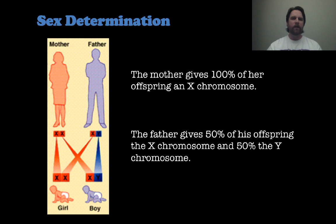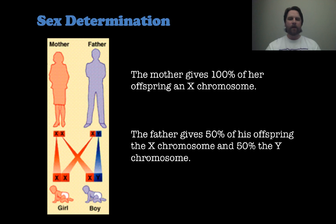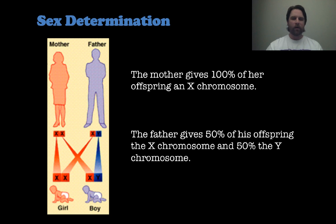Looking at sex determination, the mother can give an X chromosome to her offspring and the father can give either an X or a Y. So it is whichever gamete the father gives that determines whether or not a child is male or female. The father gives that X or the Y, therefore a 50-50 shot at either one. That's where we get the 50% girl, 50% boy for our offspring over a long period of time.